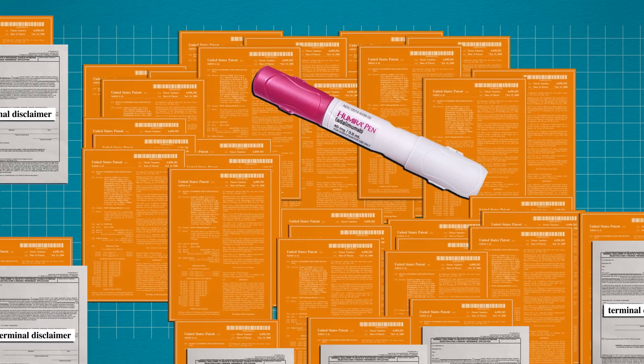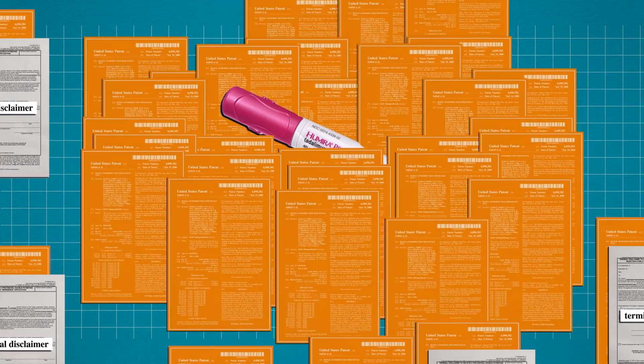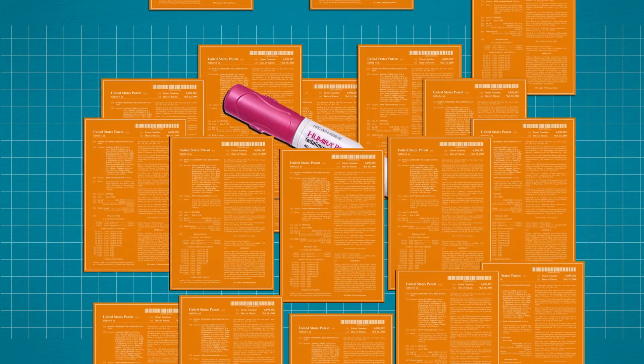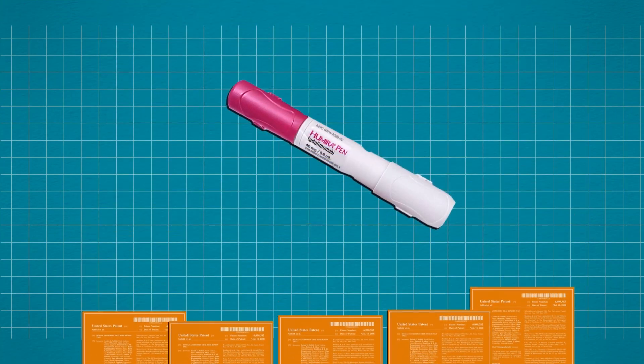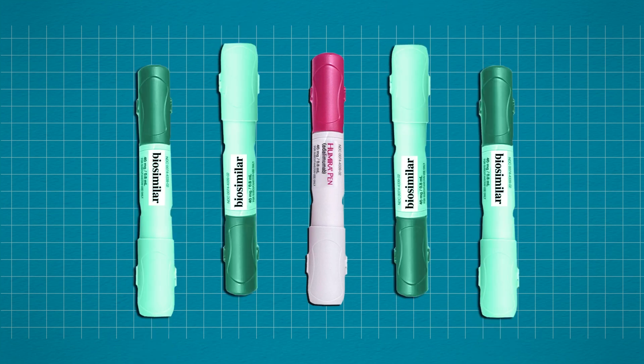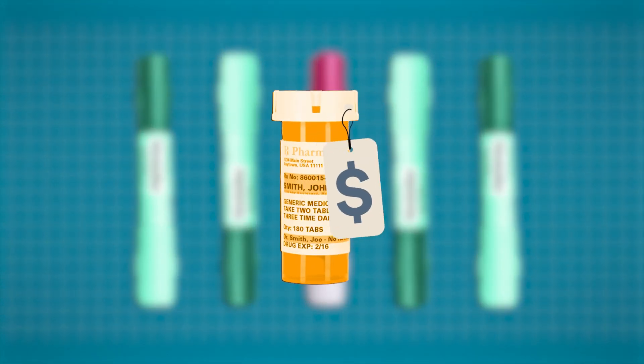What we do know is that when Humira's patent portfolio finally expired in January 2023 and the patent thicket was cut down, the biosimilar version of the drug finally entered the market. But prices didn't go down for patients then either.